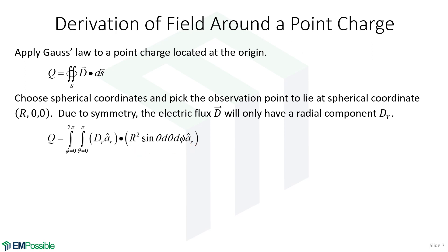Let's work through the math. We have some constants we can bring out to the left. We also calculate the dot product — both the differential surface and our expression for D only had an R component, so the unit vector A_R drops, and we bring D_R squared to the outside. Now we're left with our integration. We integrate with respect to phi first because there are no phi terms, so the integral from 0 to 2 pi of d phi just evaluates to 2 pi.